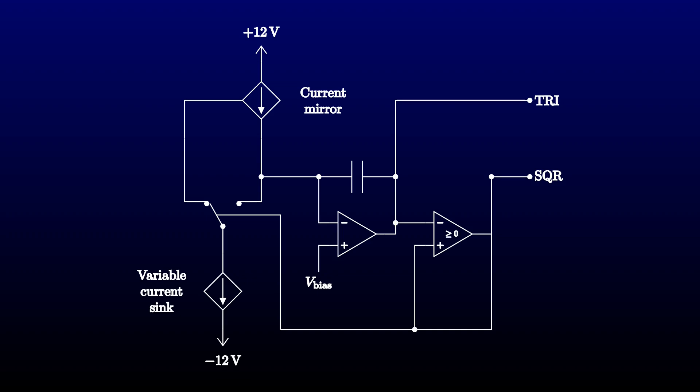When the switch is to the left, current is drawn out of the programming port of the mirror. An equal current flows out of the mirror's output port and into the integrator. The integrator charges, so its output voltage falls. When the voltage on the integrator, suitably adjusted, reaches ground, the comparator changes state and the switch turns to the right.